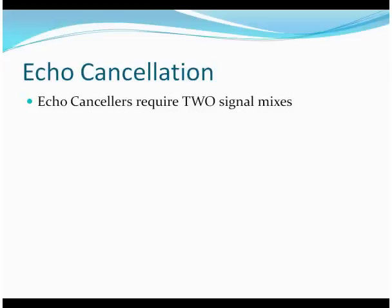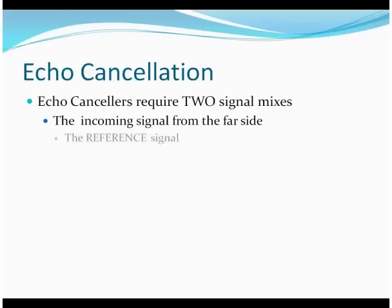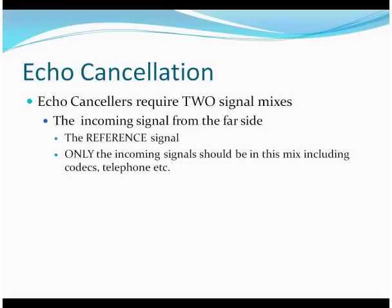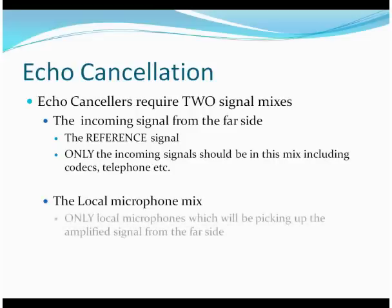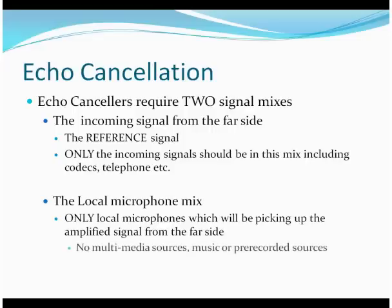Echo cancellation requires two signal mixes. First, you need the incoming signal from the far side — that is, any signal coming from the outside — and we call this the reference signal. Only the incoming signal should be included in this mix; that's strictly outside signals coming into the room. The local microphone mix consists only of the microphones that will be picking up that amplified signal from the far side. You don't want any other signals in this mix — only the microphones that can pick up that signal from the speakers. No multimedia sources, no music, no pre-recorded sources.